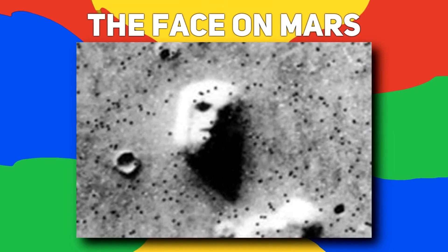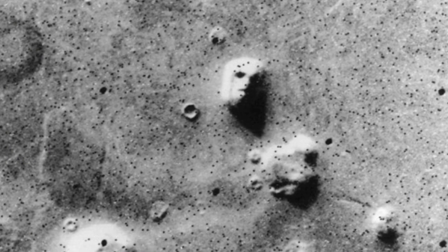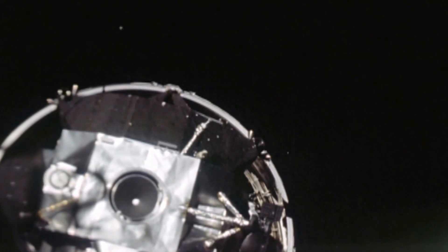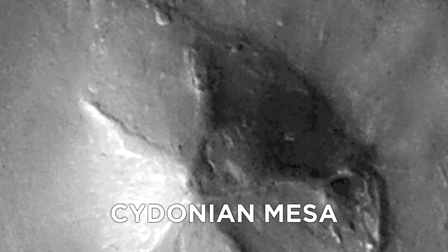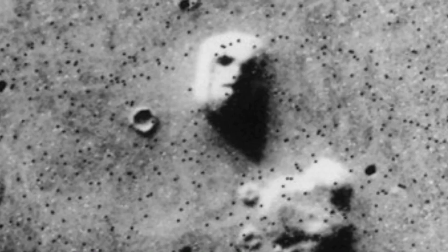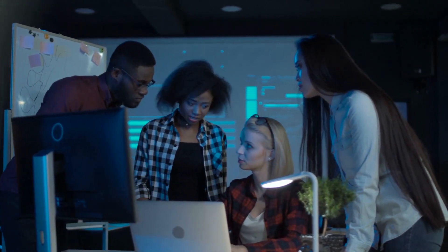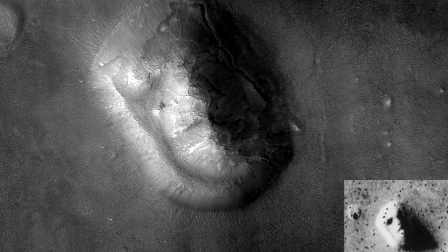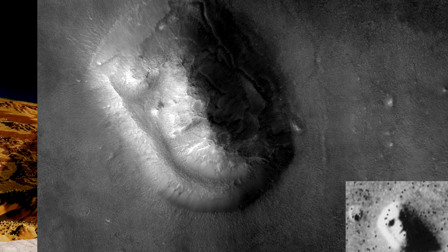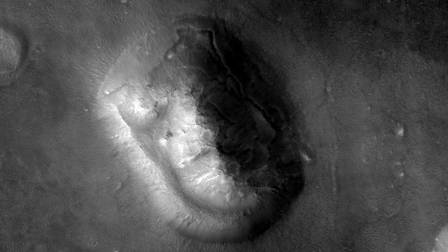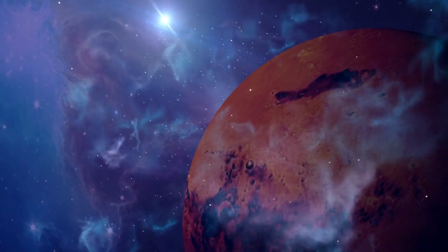Number two, the Face on Mars. This incredibly famous picture was taken in 1976 by the Viking 1 spacecraft. As it was picturing what was known as the Cydonian Mesa on Mars, it captured a picture of what looked to be a humanoid face. This caused a lot of people to think that we had finally found life on Mars. But it was dismissed by scientists as a trick of the light and shadow. Viking actually went back and photographed the same area, and lo and behold, the face was no longer there.